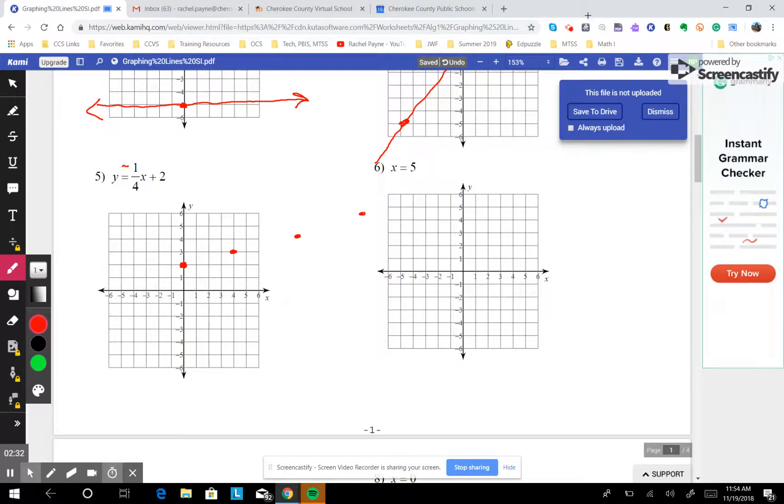If you want to, you can put a negative in front of both of them. Rise negative 1, run negative 4. Rise negative 1, run negative 4. It's still the same line.